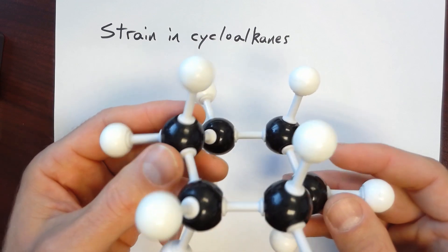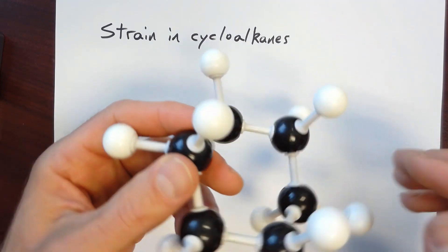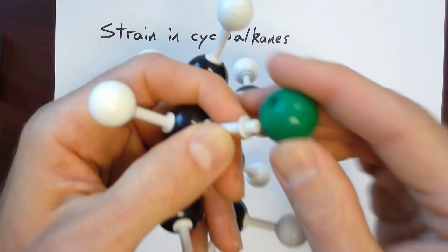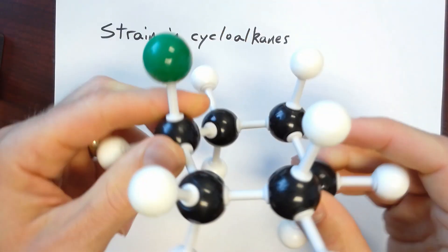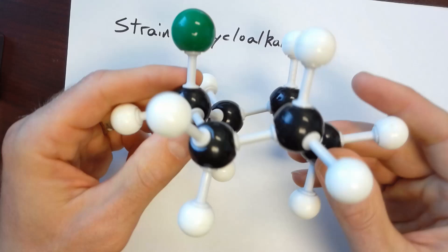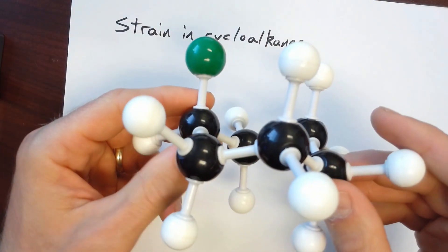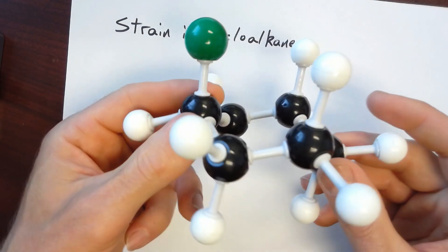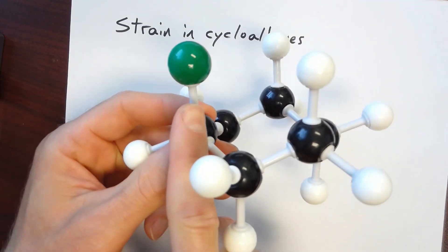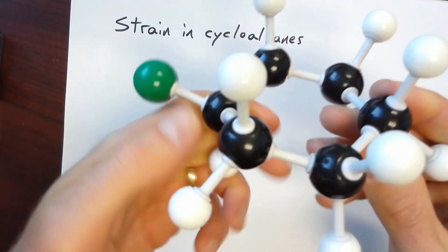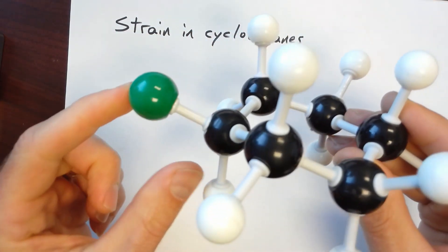Substituted cyclohexanes can exhibit quite different strain. So let me put a different substituent on here. Let's just say that's a chlorine atom, for example. The chlorine atom can be either in the axial position, or if we go through a ring flip, it can be in an equatorial position.